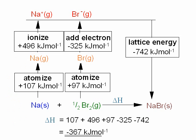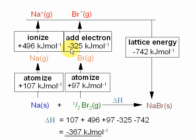Putting this information onto the chart: to atomise sodium requires 107 kJ per mole to get to the sodium gas; to ionise sodium and remove the electrons, 496 kJ per mole; to atomise bromine and break all the bromine-bromine bonds, 97 kJ per mole; and then adding an electron to each of the bromine atoms actually releases energy — that's minus 325 kJ per mole.